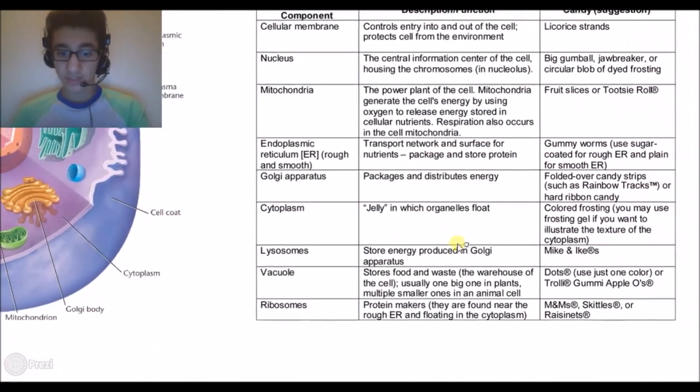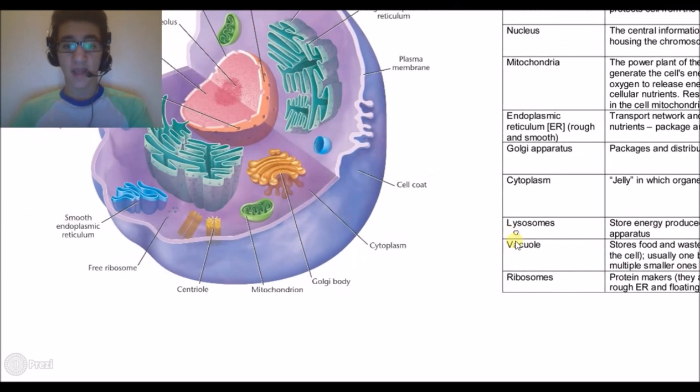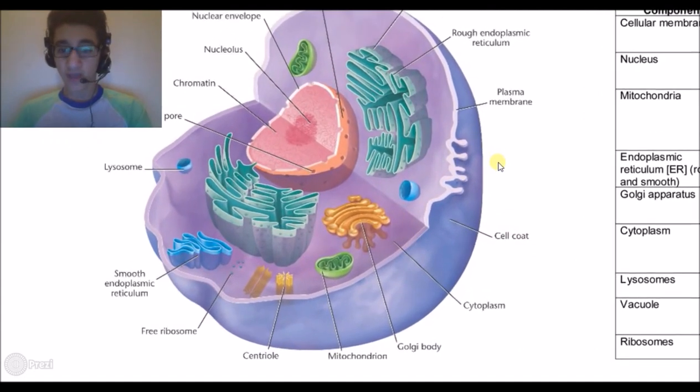The vacuole stores food and waste, the warehouse of the cell. Usually one big one in plant, multiple small ones in animal cell. I checked and there is no vacuole here. I do not know why even though it's pretty important.